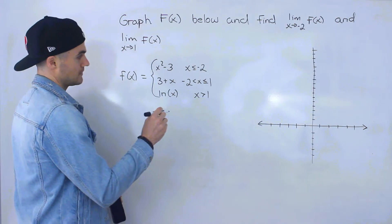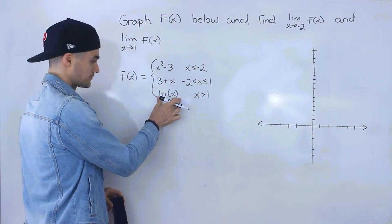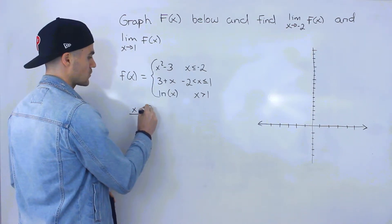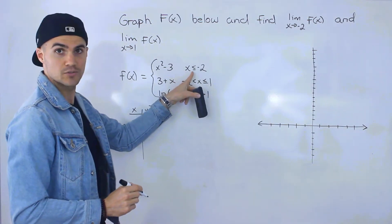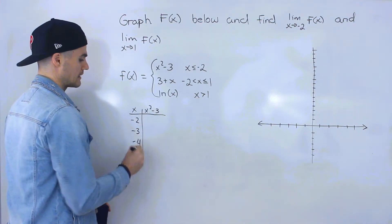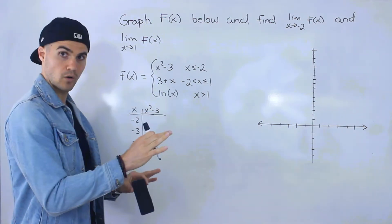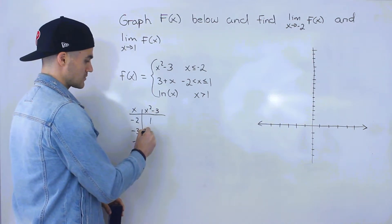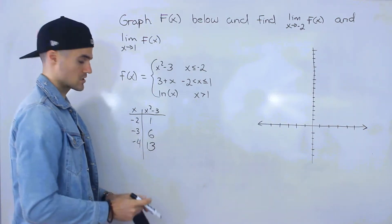To graph it, I'm going to create a table of values for each of the three functions. Starting with the first function: x squared minus three, for all x values less than or equal to negative two. I'll pick x = -2, -3, and -4. Plugging in: (-2)² - 3 = 1, (-3)² - 3 = 6, (-4)² - 3 = 13.